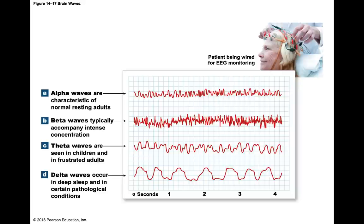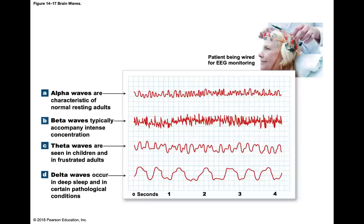Alpha waves are found in a healthy awake adult with eyes closed; when sleeping or working on a task, alpha waves disappear. Beta waves occur when a person is paying attention to something, concentrating, under stress, or under psychological tension — they are bigger and more rapid than alpha waves. Theta waves are transiently found in normal sleeping adults; if seen in an awake adult, they may indicate a tumor, and they're also seen in intensely frustrated adults or in children.